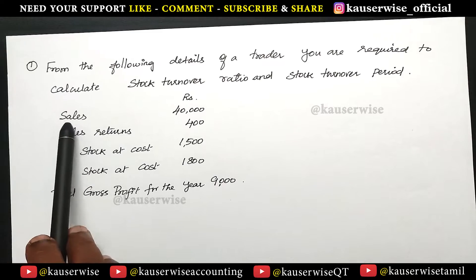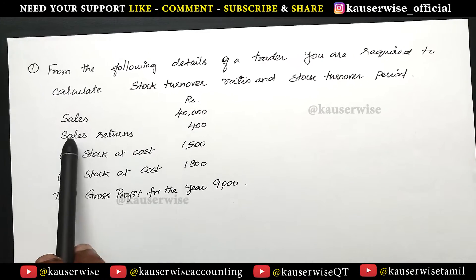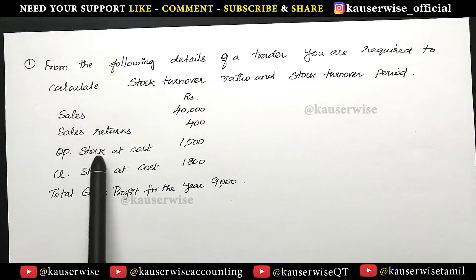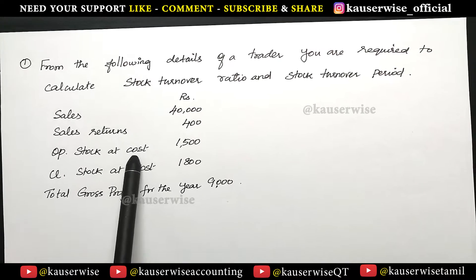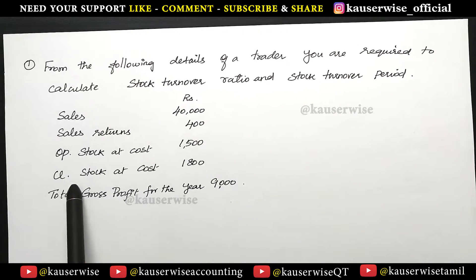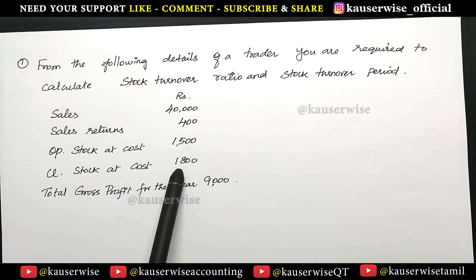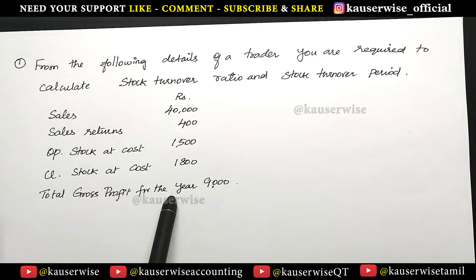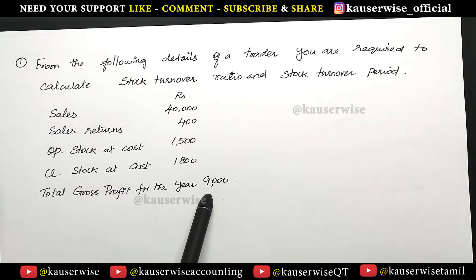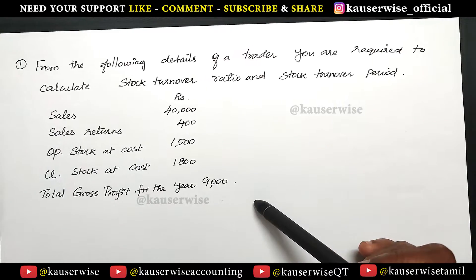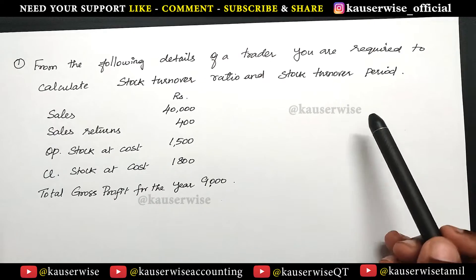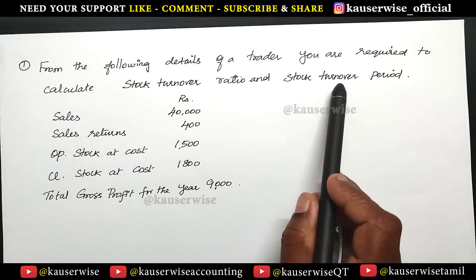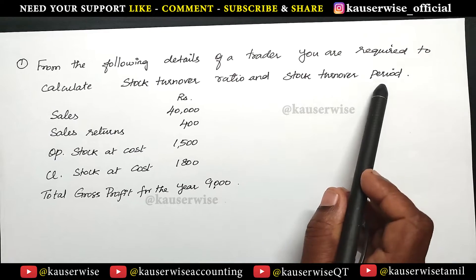See the information. Sales 40,000, sales return 400, opening stock at cost 1,500, closing stock at cost 1,800, total gross profit for the year 9,000. With this information, they are asking us to find out stock turnover ratio and stock turnover period.